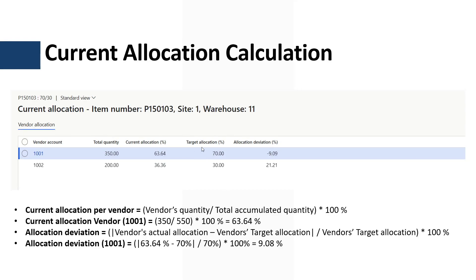Then we have the target allocation per vendor as specified in the policy. Then we have the deviation between the target allocation and the current allocation. The deviation percentage per vendor is calculated using the absolute value of the vendor's current allocation minus the vendor's target allocation, divided by the vendor target allocation, multiplied by 100. So the allocation deviation for vendor 1001 equals 9.09%.